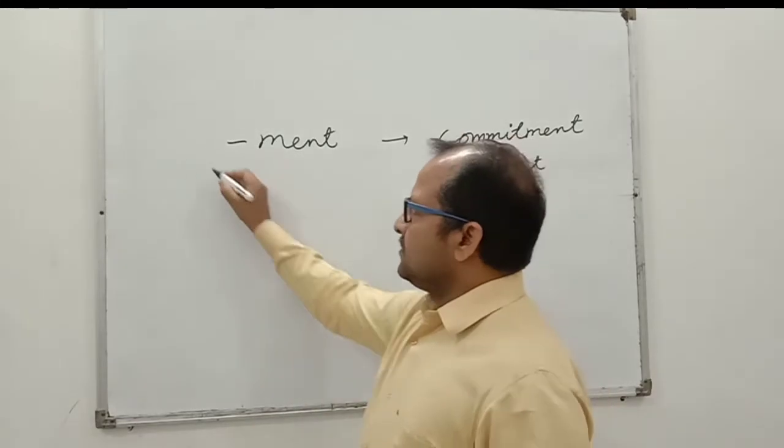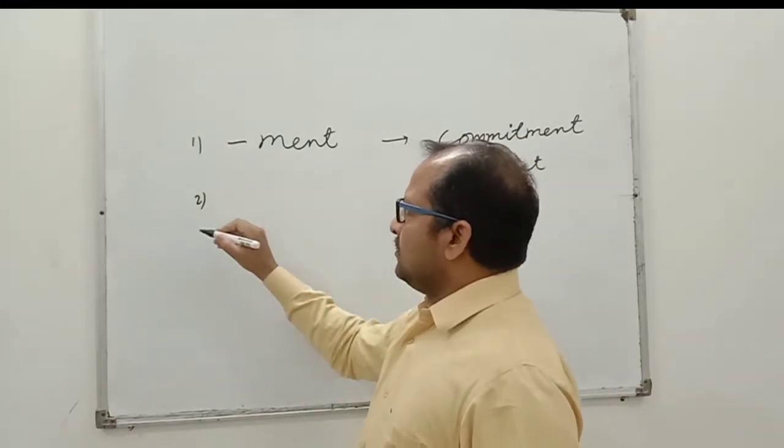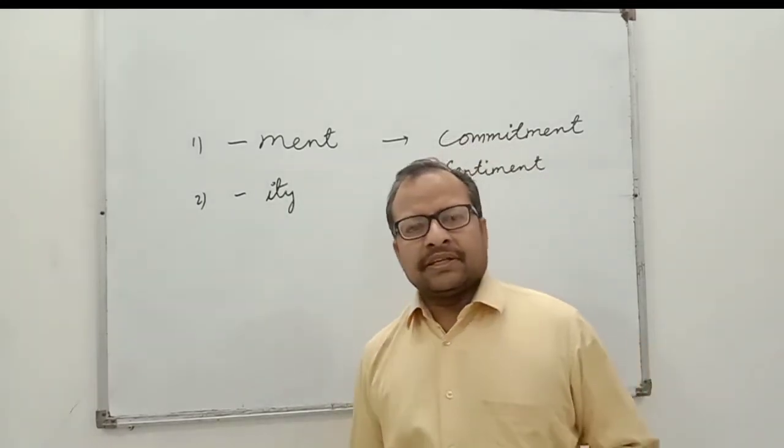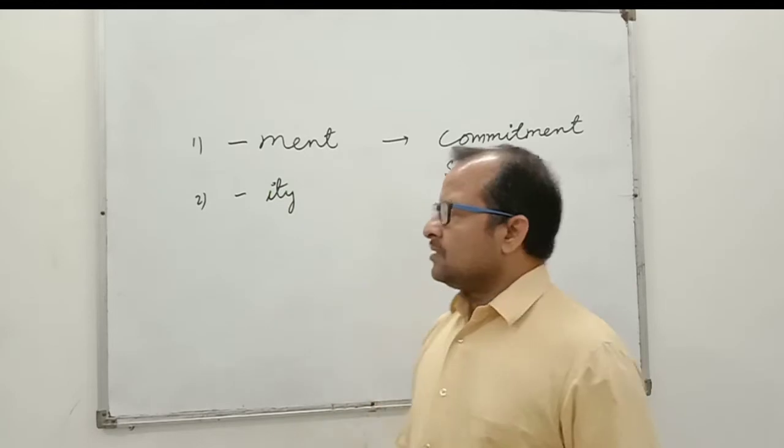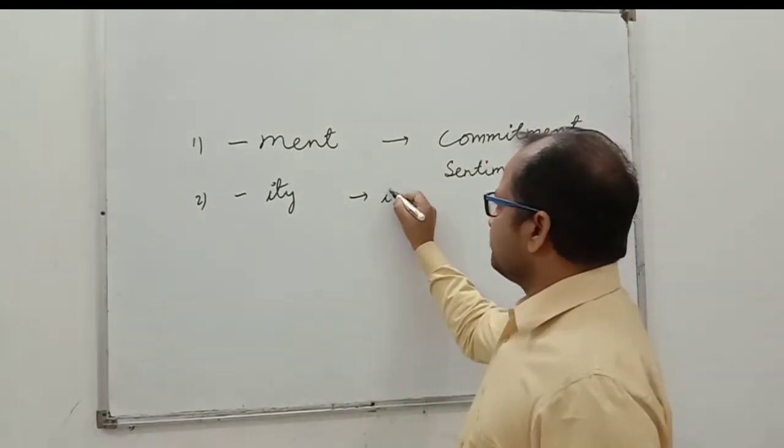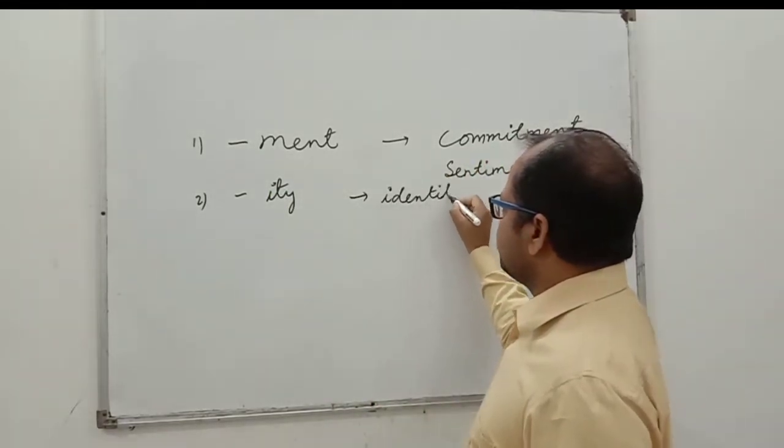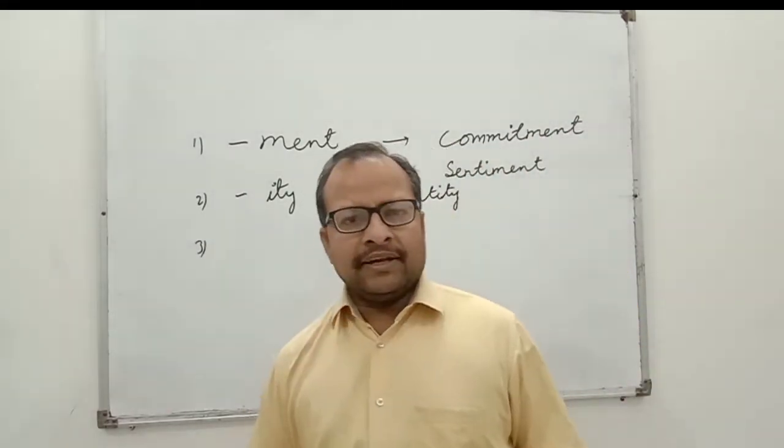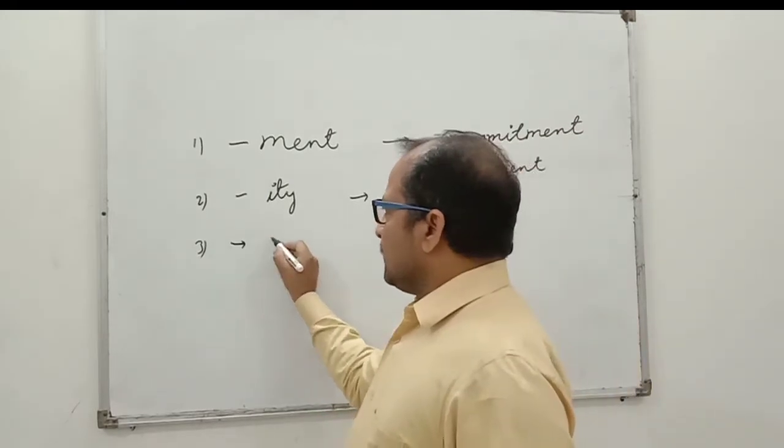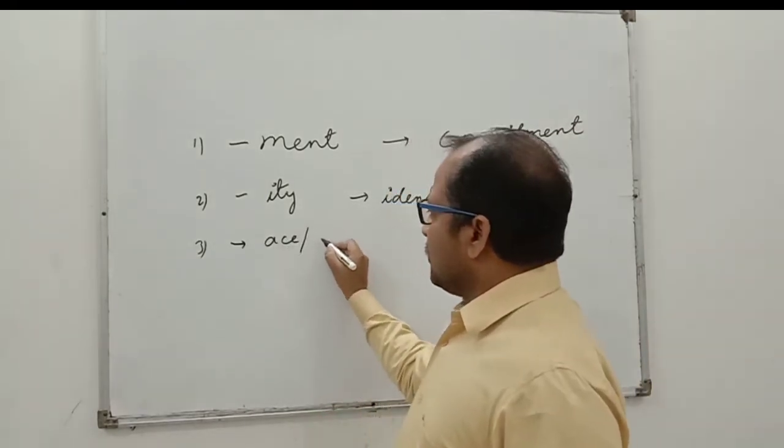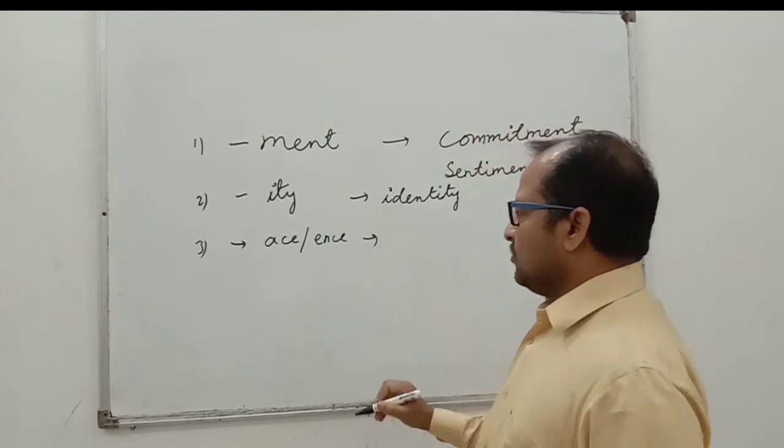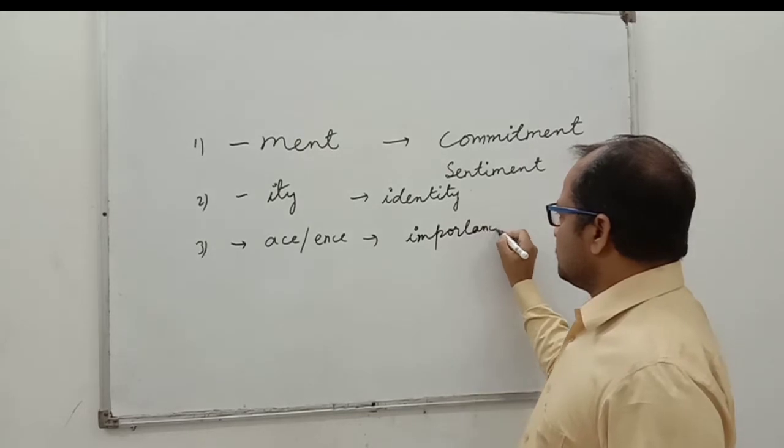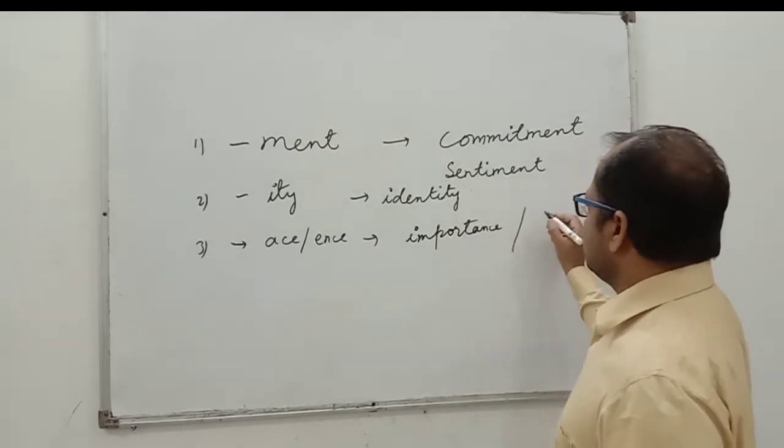The second point is if the word ends with I-T-Y, it must be noun in form. For example, identity. The third point is if any word ends with A-C-E or E-N-C-E. For example, importance and influence.